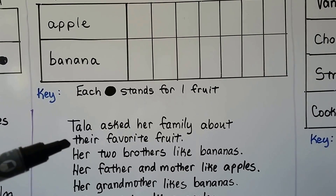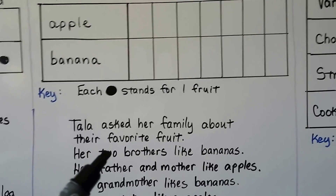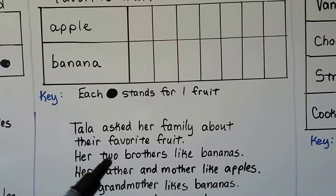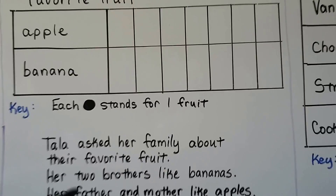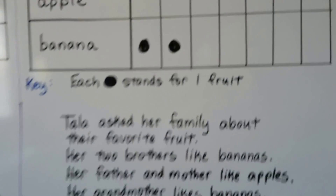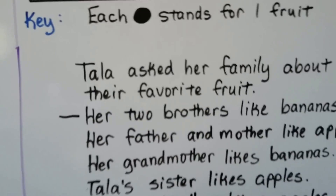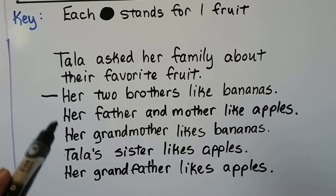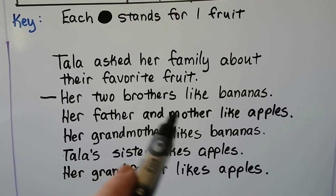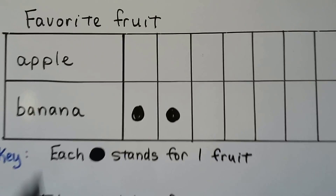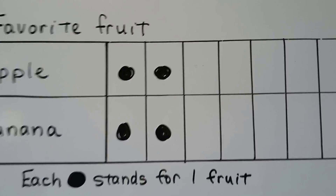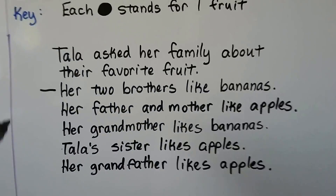So we need to take this information and put it into our picture graph. Her two brothers like bananas — that's two people — so we need two dots by bananas. One, two by bananas. Her father and mother like apples — that's two more people — so we need two dots in the apples row. One, two for apple.